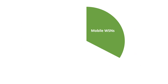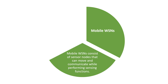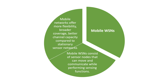Finally, mobile WSNs. The key difference between mobile WSNs and all other types is that the other types are stationary — the sensor nodes do not move and remain static in place. But mobile WSNs consist of sensor nodes that can move and communicate while performing sensing functions. This offers more flexibility, broader coverage, and better channel capacity compared to all other stationary sensor networks.